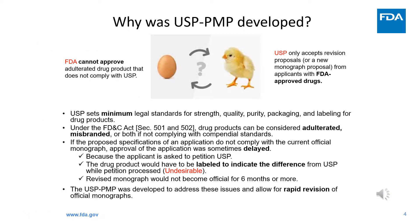So why was USP PMP developed? We all know that USP sets the minimum legal standards for drug substance or drug product. Under the Food and Drug Law, drug products may be considered as adulterated or misbranded, or both, if they do not comply with the USP standards. When FDA reviews a submission, if the proposed specifications do not comply with the current USP monograph, approval of the application was sometimes delayed, because we usually ask the applicant to petition USP. Then the drug product would have to be labeled to indicate the difference from the USP while the petition is ongoing, which is undesirable.